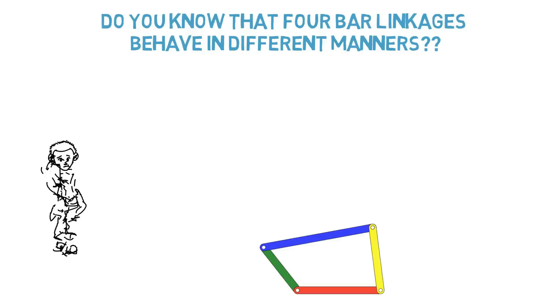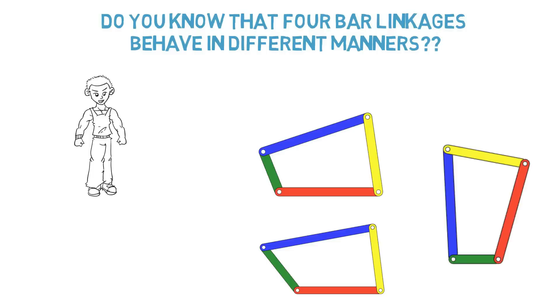Look at these four bar linkages. What information can you infer from these linkages? These all are very similar. Exactly, but they behave differently.